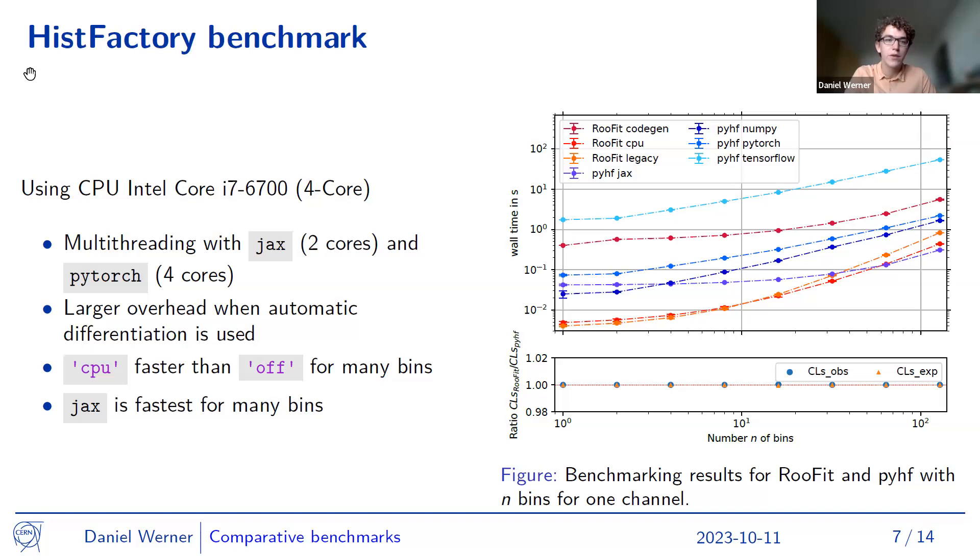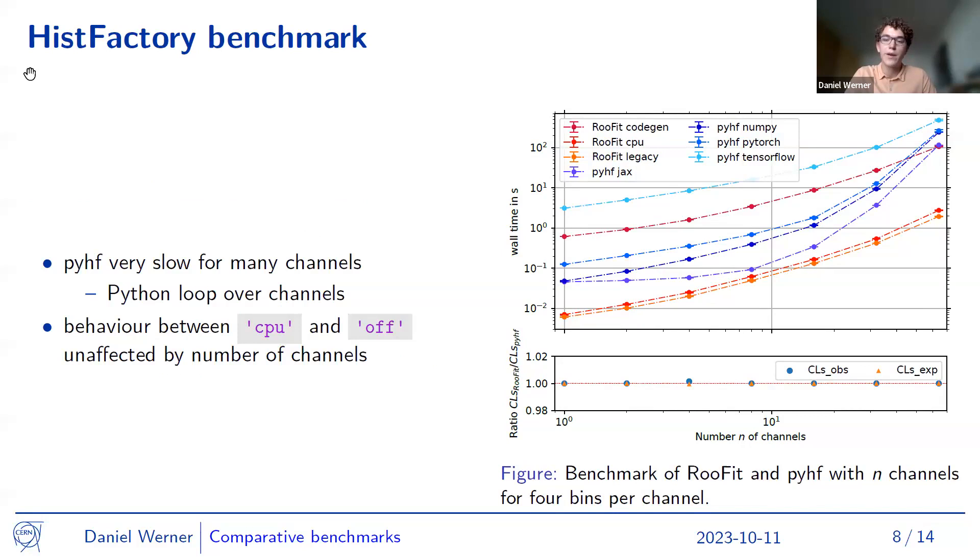And we also did a benchmark varying not the number of bins in our histogram, but the number of channels. So usually in physics analysis, we can have multiple channels, so multiple, in a way, separate histograms that we all measured and then combined to find some results with more statistics. And what we see here as a main result is that the pyhf backends become rather slow for many channels. And looking into it, we found that there's a loop in Python code that iterates over all the channels, which leads to a reduced performance for many channels. And we, interestingly, see, for example, between the CPU and legacy of RooFit, there's no change in performance. Since the vectorization doesn't happen between different channels, but only within each channel, and then the resulting likelihoods get combined in the end.